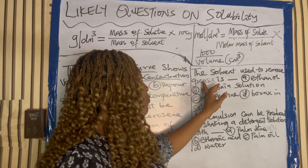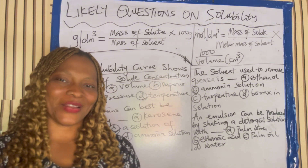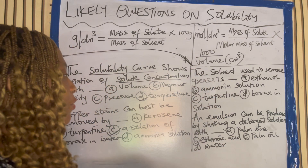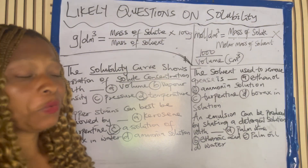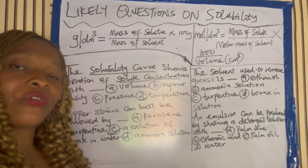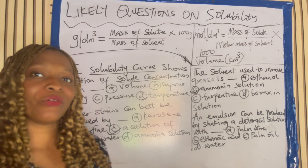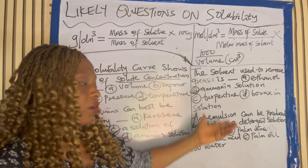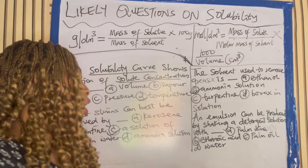The solvent used to remove grease is dash — ethanol, ammonia solution, turpentine, or borax and water? The solvent used to remove grease is ammonia solution. You can also use kerosene to do that, but kerosene is not an option here. You're going to answer your question based on the options given to you.